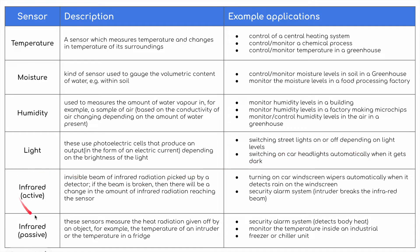We have two different types of infrared sensor: active and passive. In active infrared, these are invisible beams of infrared radiation picked up by a detector. If the beam is broken, there will be changes in the amount of infrared radiation reaching the sensor. These could be used for turning on car windscreen wipers automatically when rain is detected on the windscreen, or in security alarm systems with an infrared beam detecting an intruder.